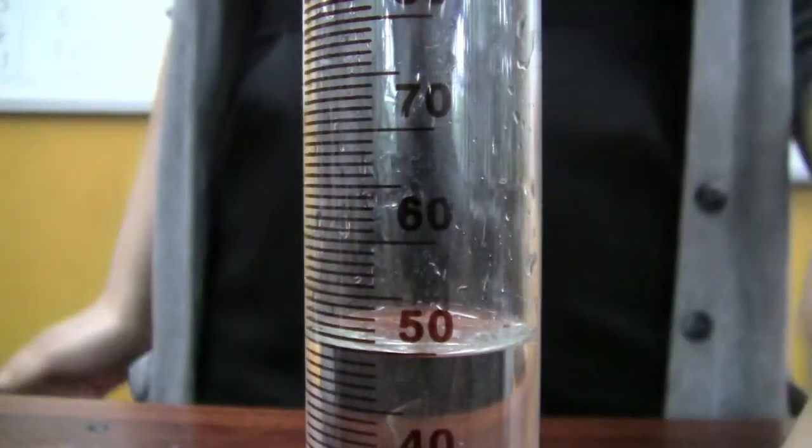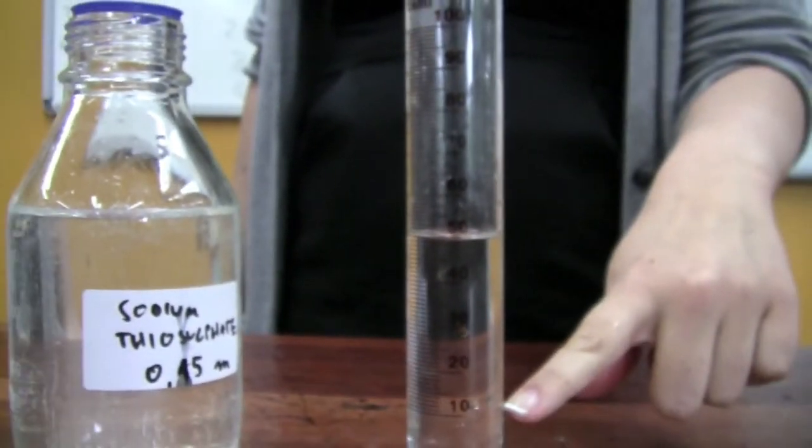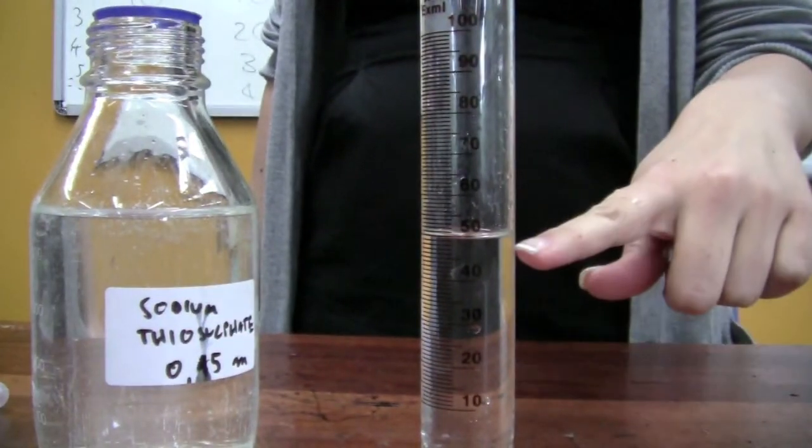So for the fourth dilution, we have 20 ml of sodium thiosulfate and 30 ml of water.